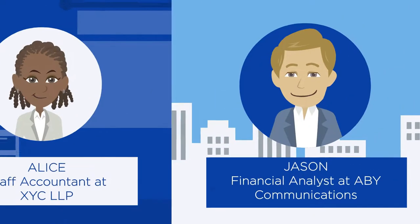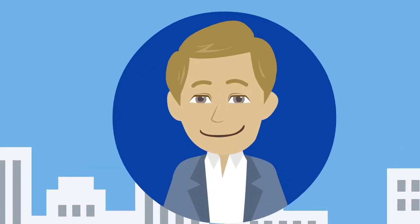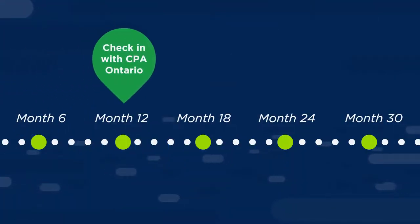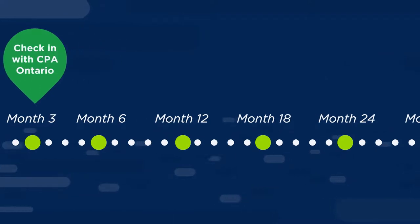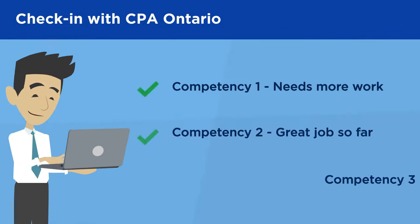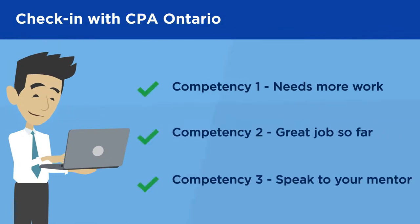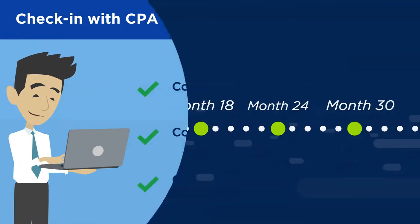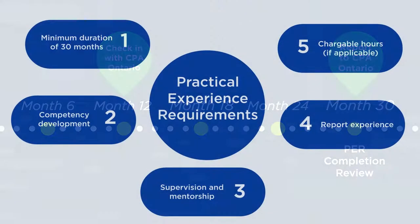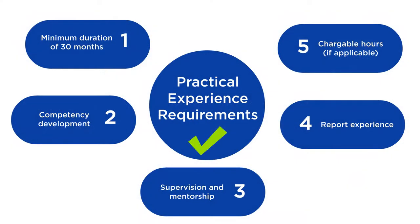If, however, you are in the EVR route like Jason, you will need to check in with us after the first 12 months of your PE journey, or sooner if you have been asked to do so by CPA Ontario. These check-ins enable us to provide important feedback on your PE progress. You will then report to CPA Ontario at the end of your PE, once you have met all your requirements.